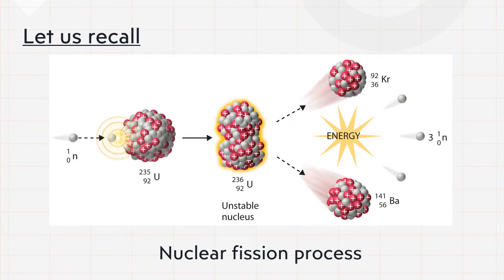Let us recall from the previous subtopic of nuclear energy, which is the process of nuclear fission. As you can see here, uranium-235 nucleus is being bombarded by a neutron. Then an unstable nucleus uranium-236 is produced, and a heavy nucleus splits into two lighter nuclei — krypton-92 and barium-141 — while releasing three other neutrons. At the same time, a large amount of energy is being released.